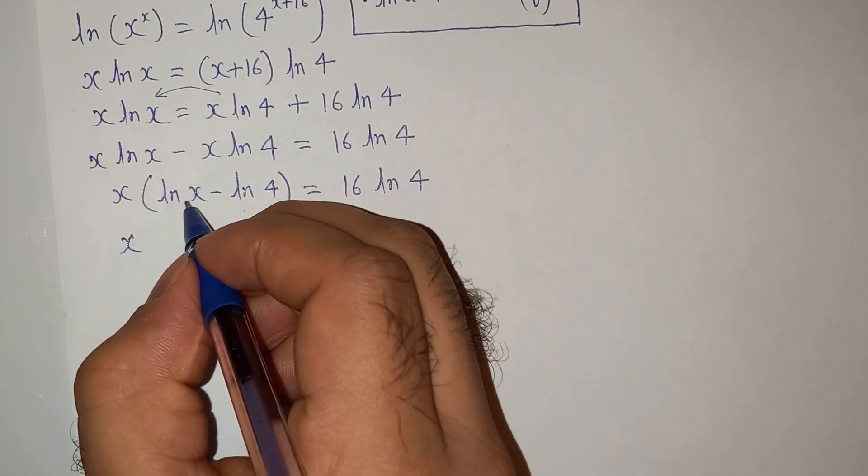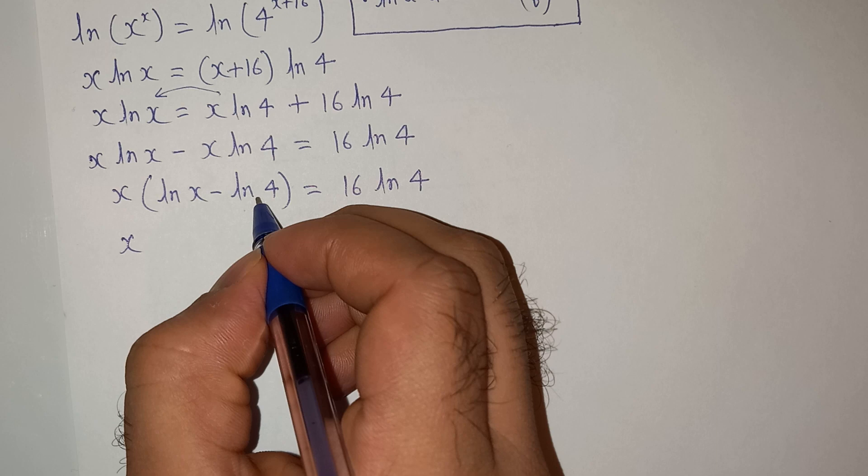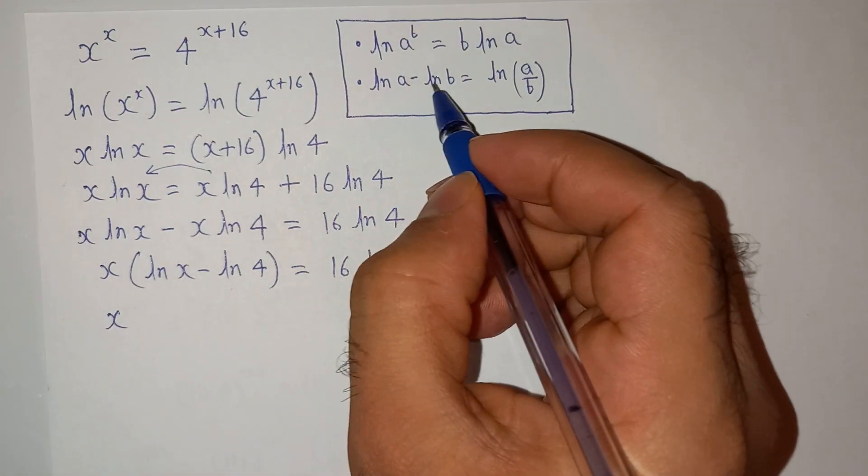Now as you can see this is log x minus log 4, and as per this rule log a minus log b equals to log a by b.